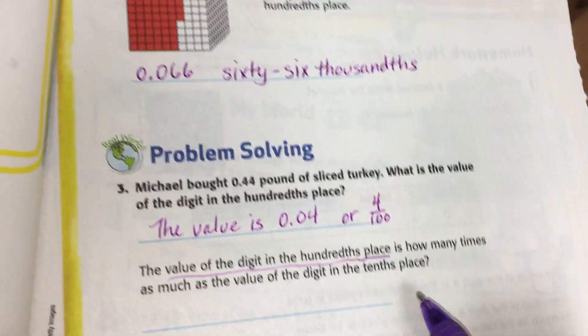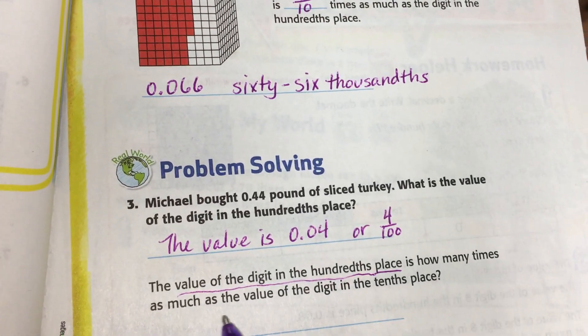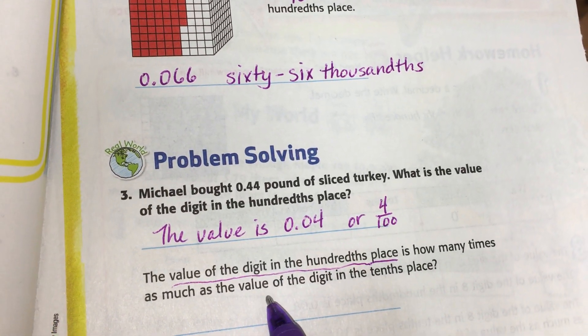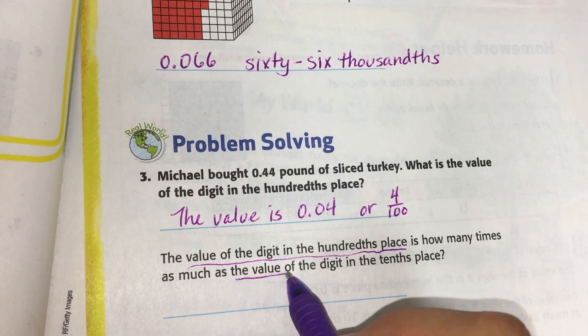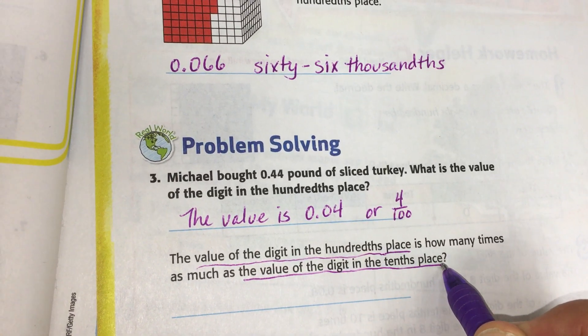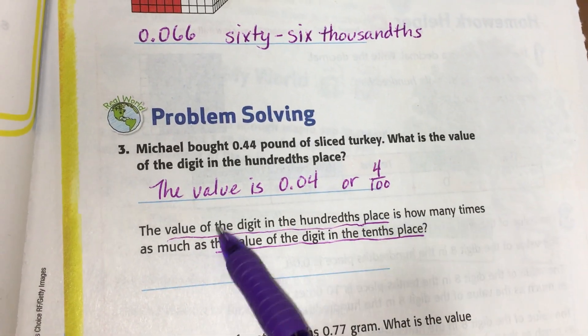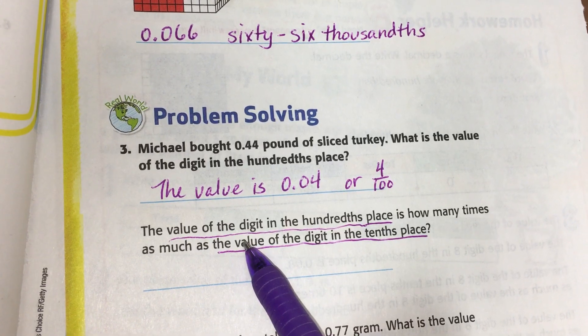Because we're going to come back to it. Is how many times as much as the value of the digit in the tenths place. I'm going to underline that whole thing. Because when we answer it, we're going to go ahead and state what this is and what this is.